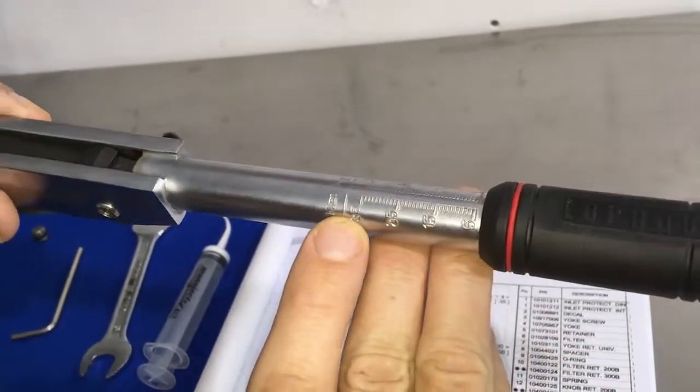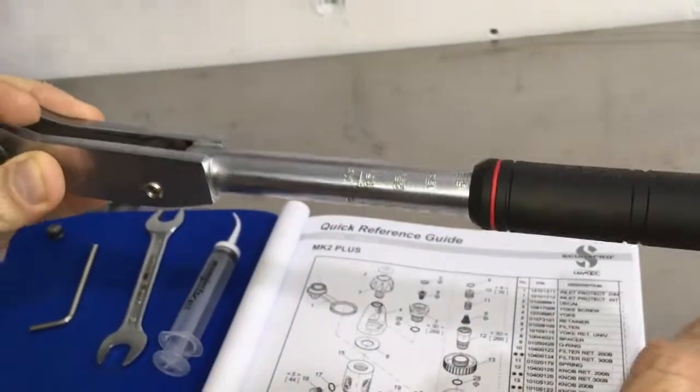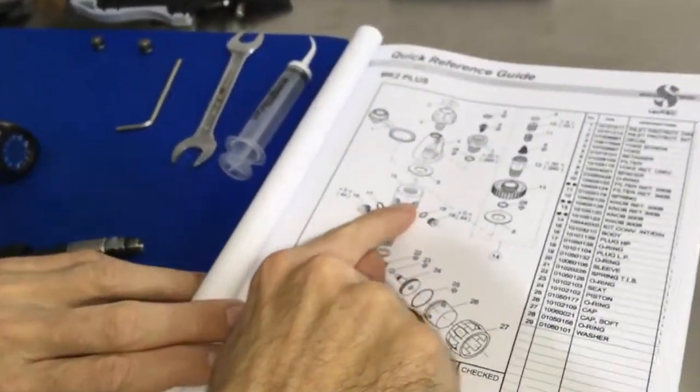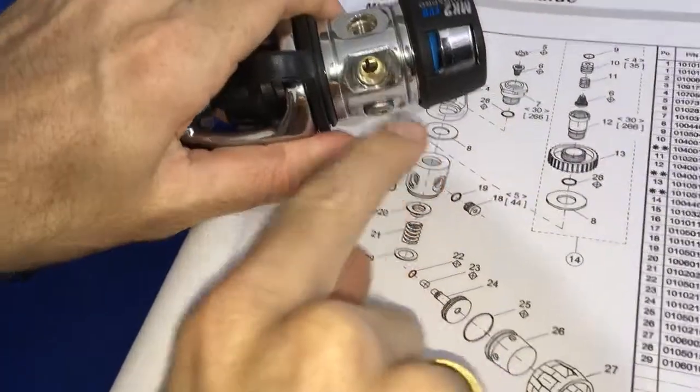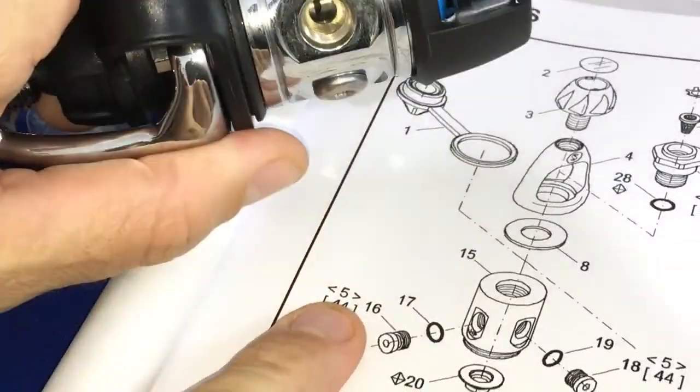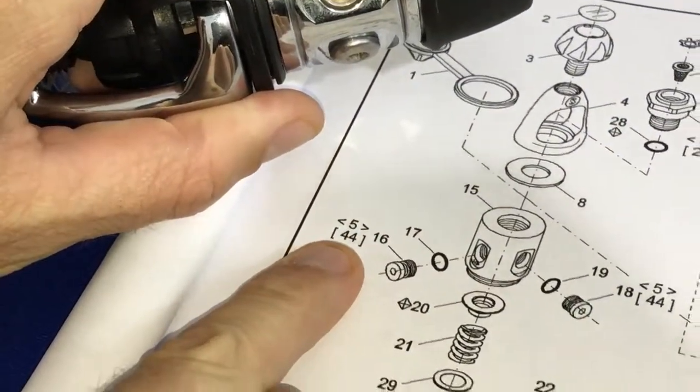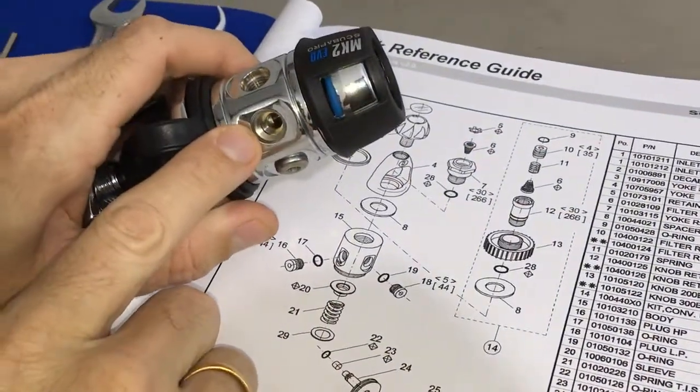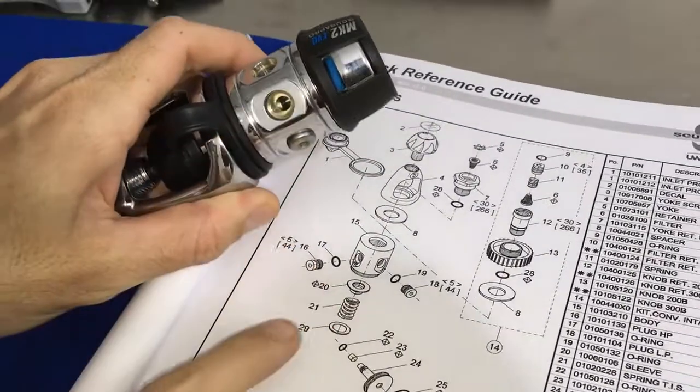Now if you look at the port plug here which will go into the side of the body of the first stage, it has a rating of 5 Newton meters. So that's this port plug into this low pressure port on the side of the first stage body.